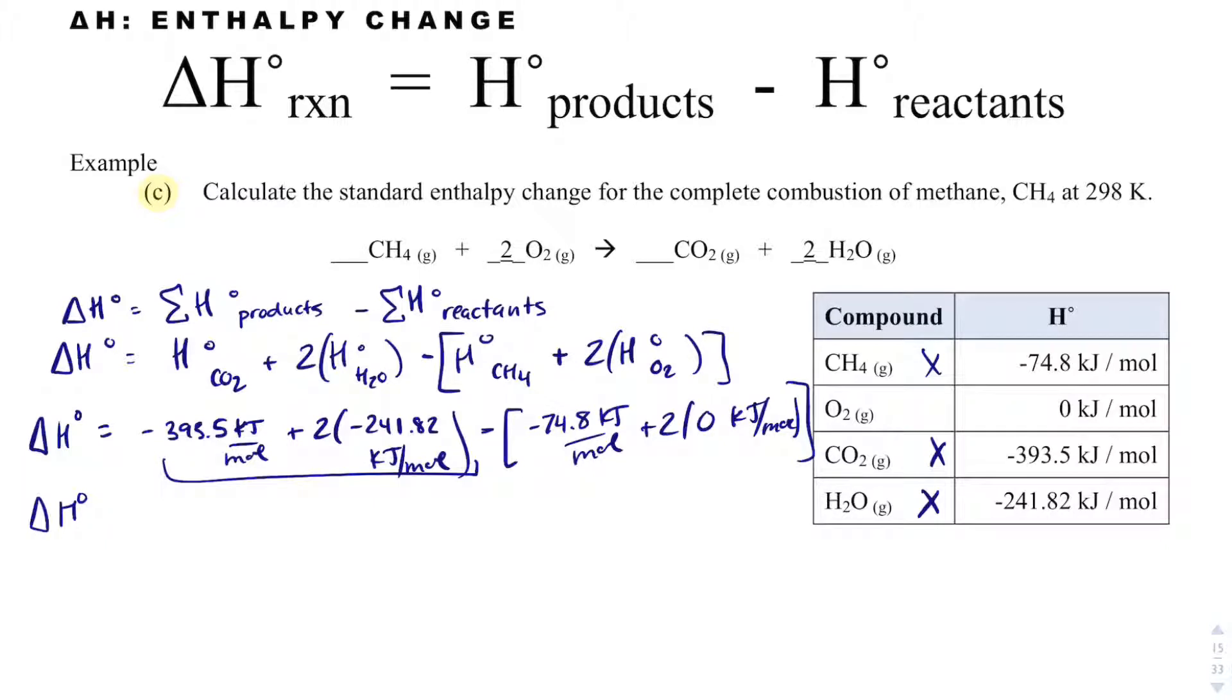So all I need to do is add up my two sides. Again, I want to get the most points possible, so I'm going to show my products and my reactants. My products are going to be negative 877.14 kilojoules per mole. I'm going to subtract that from my reactants, which are negative 74.8 kilojoules per mole. And when I get that, I end up getting negative 802.34 kilojoules per mole.